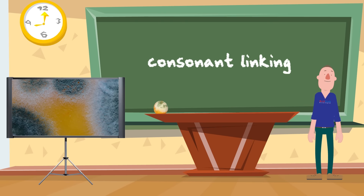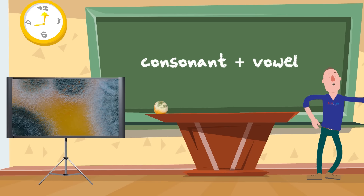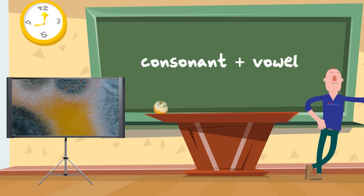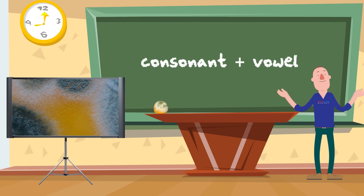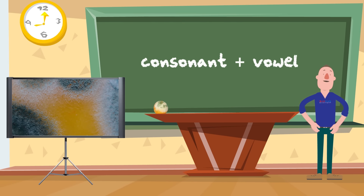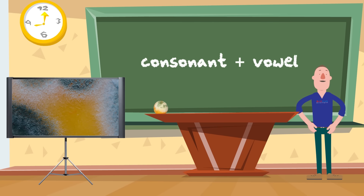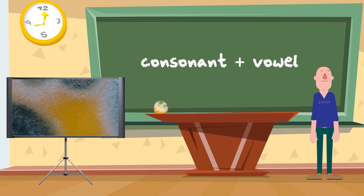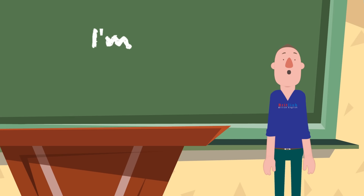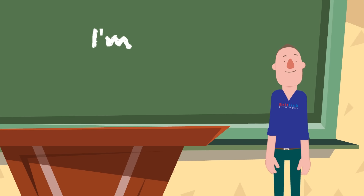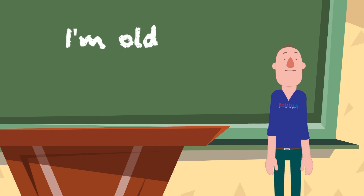Consonant linking happens when a consonant sound at the end of a word is followed by a vowel sound. When pronounced, the consonant links to the vowel and we hear something unexpected. In this case, the student heard "Mould."